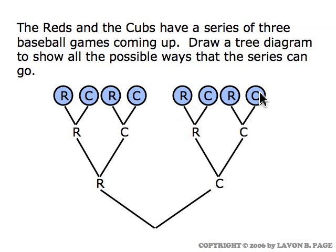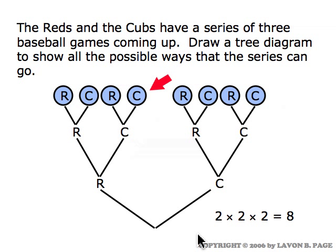The eight blue circles represent the eight possible outcomes for the entire series. The red arrow is pointing at one of the outcomes — the one in which the Reds win game one, the Cubs win game two, and the Cubs win game three. Since there are two possible outcomes for the first game, two for the second, and two for the third, the number of ways the entire series can go is two times two times two, according to the multiplication principle, and that's eight. Those eight different ways the series can result are represented by the eight circles in the tree diagram.